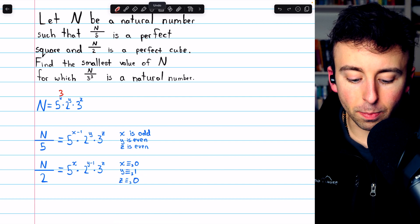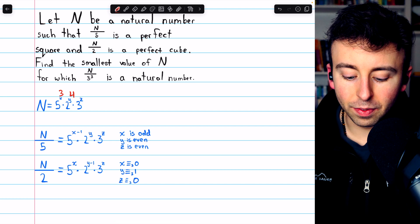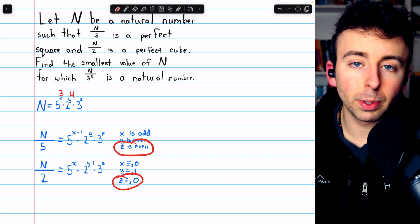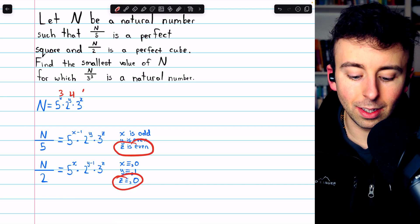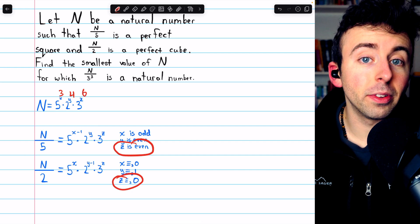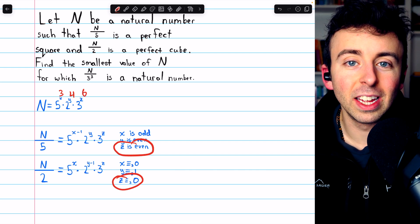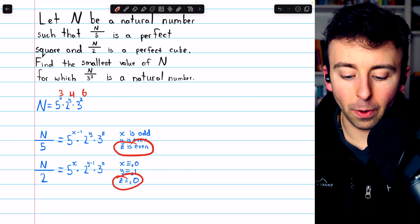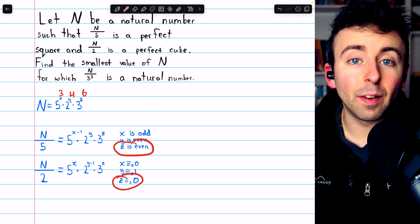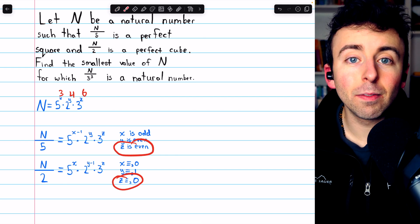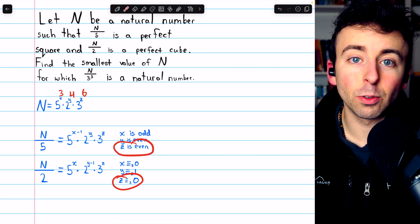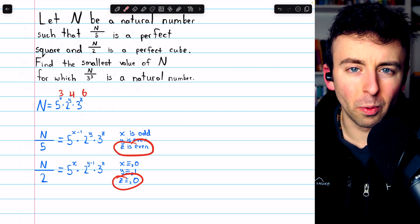If z has to be even and a multiple of 3, the smallest z could be would be 6. 0 is also an even multiple of 3, but we definitely can't have 0 because N needs to have some factors of 3 in it because N over 3 cubed is a natural number, so 0 would not work.